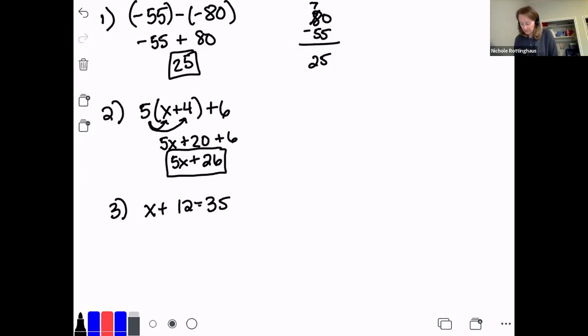And then number three was a one-step addition equation. We just learned about these last week. And remember, the goal of solving an equation is to get x by itself. In order to get x by itself, I have to subtract 12 on both sides. These cancel. And I'm left with x equals 35 minus 12, which is 23. And I'm done.